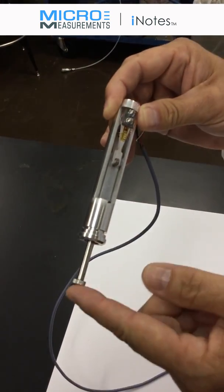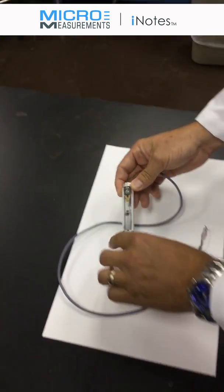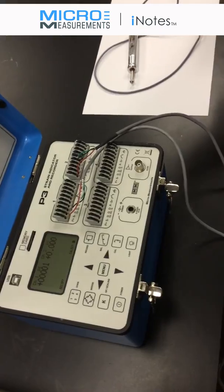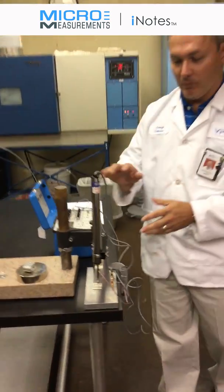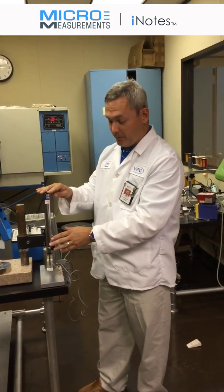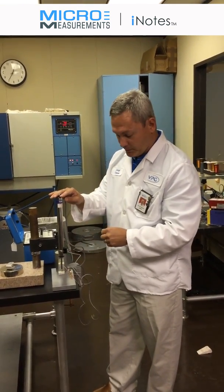We've got a full Wheatstone bridge inside of this, and that's what allows it to be connected to any strain gauge instrumentation. So let's take a look at our example. Again, we've got the HS100—that's 100 millimeter displacement, or basically four inches.